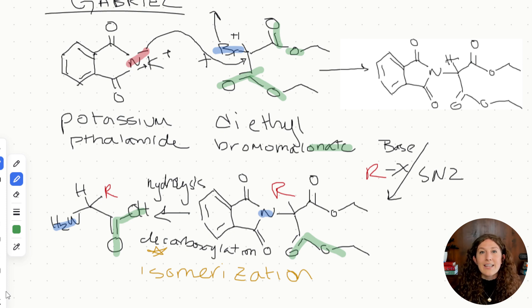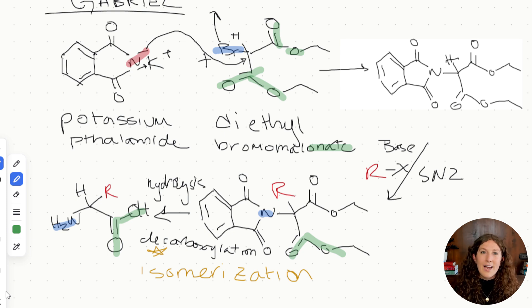Key features of Gabriel synthesis: the two major reactants are potassium phthalimide and diethylbromomalonate. They go through a series of SN2 reactions and finish with hydrolysis and decarboxylation to remove all the extra material. The decarboxylation is what gives us the racemic mixture. The exact mechanisms and electron-pushing will not be tested on the MCAT — just focus on these key features.